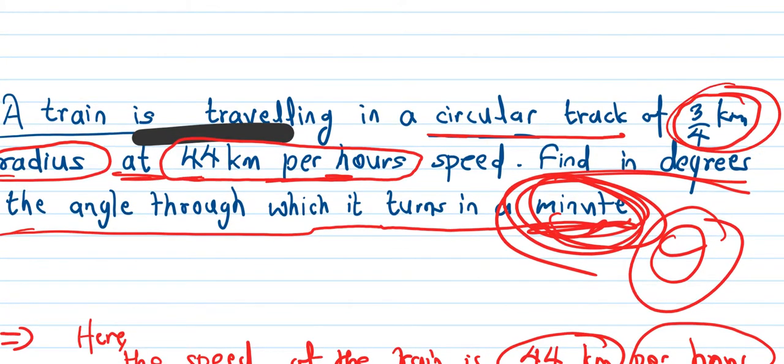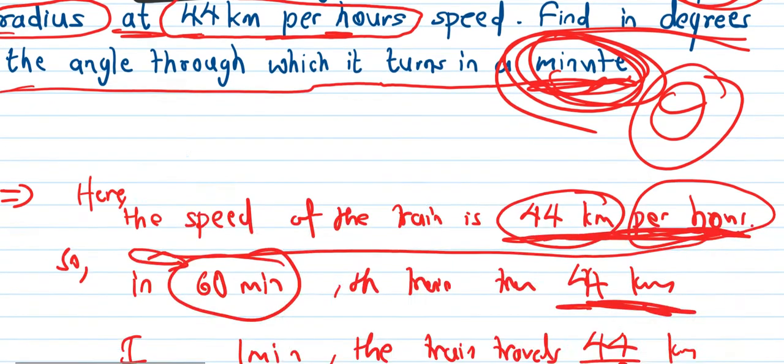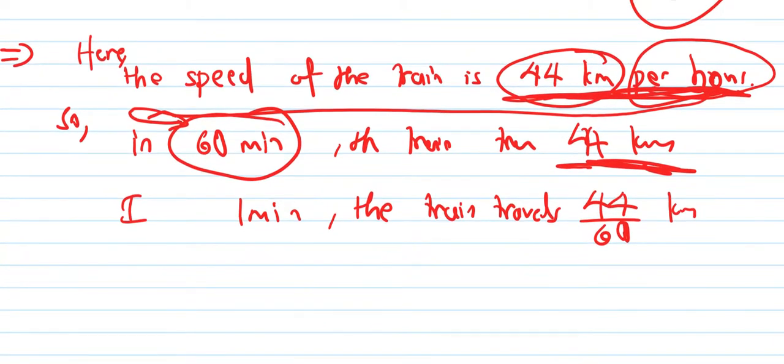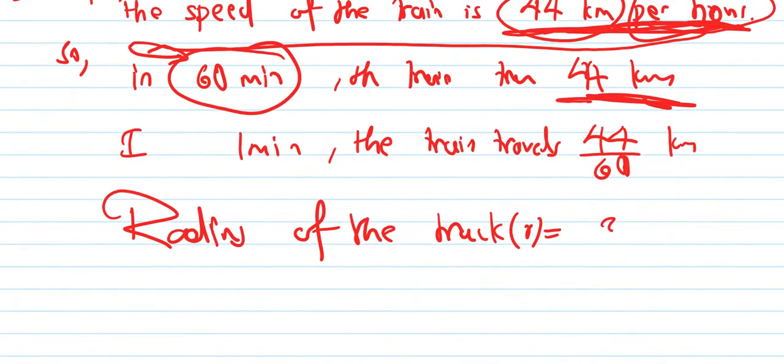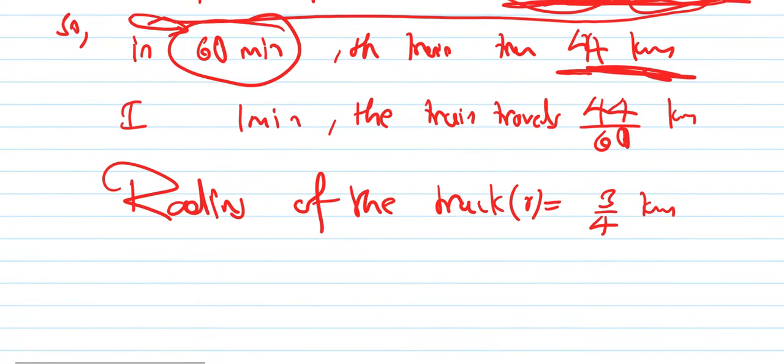We need to convert to proper units. Kilometer needs to be in the same unit, so we'll work in kilometers. The radius of the track is three by four kilometer.